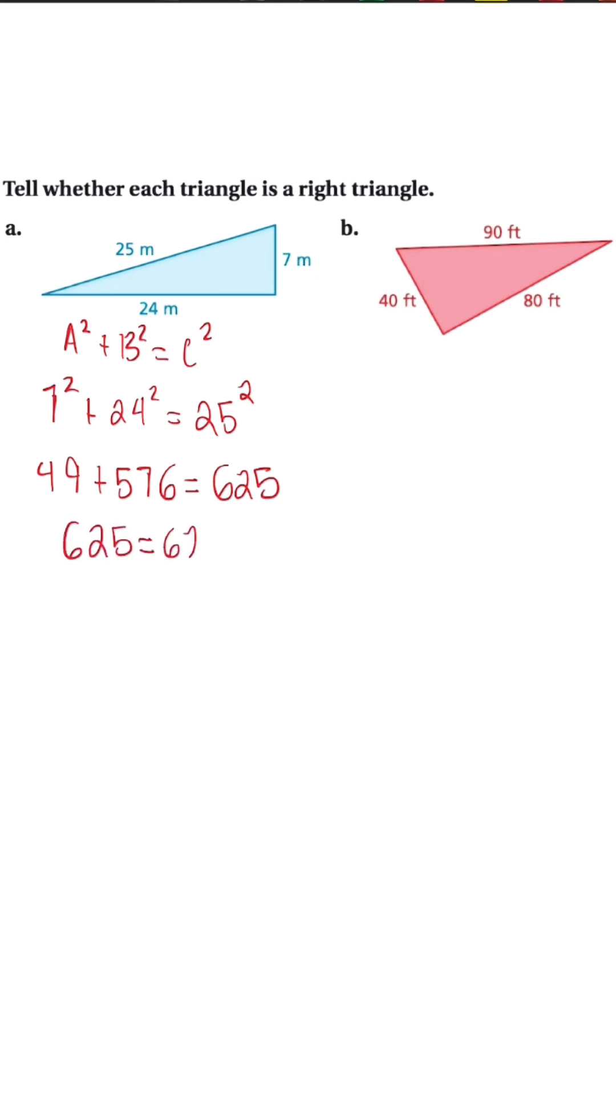When we simplify, we're going to get 625 is equal to 625, so we know that triangle a is a right triangle.